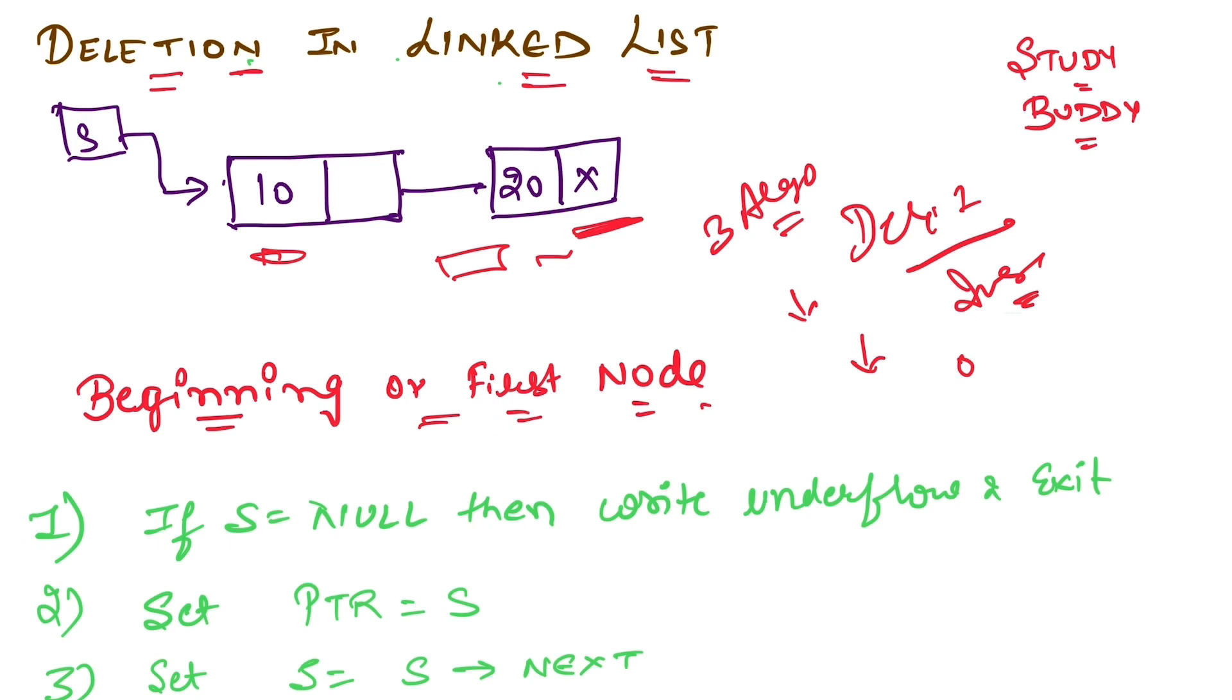Deletion of a node in a linked list at the beginning - this is very straightforward. The algorithm is very simple. It is only four steps but it is required for you to understand to build a basic concept.